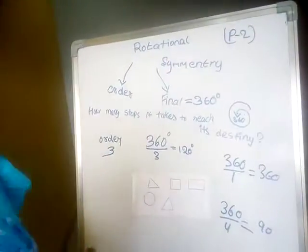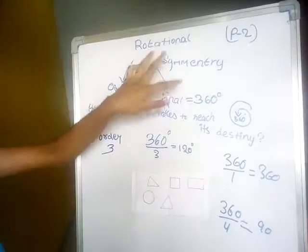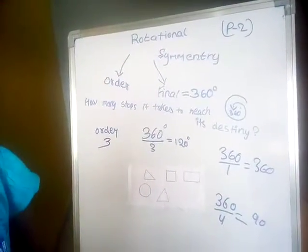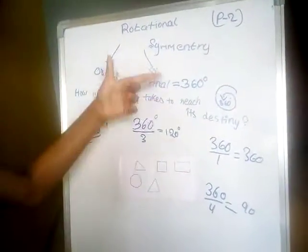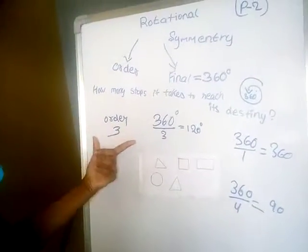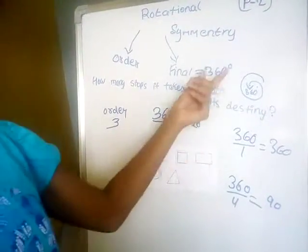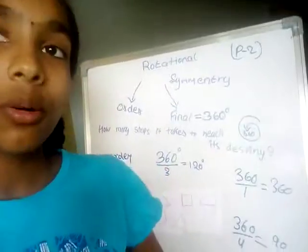This is the end of rotational symmetry. And I will just recapitulate. So we need to find the order. So we need to divide the order by 360. Thanks for watching this video.